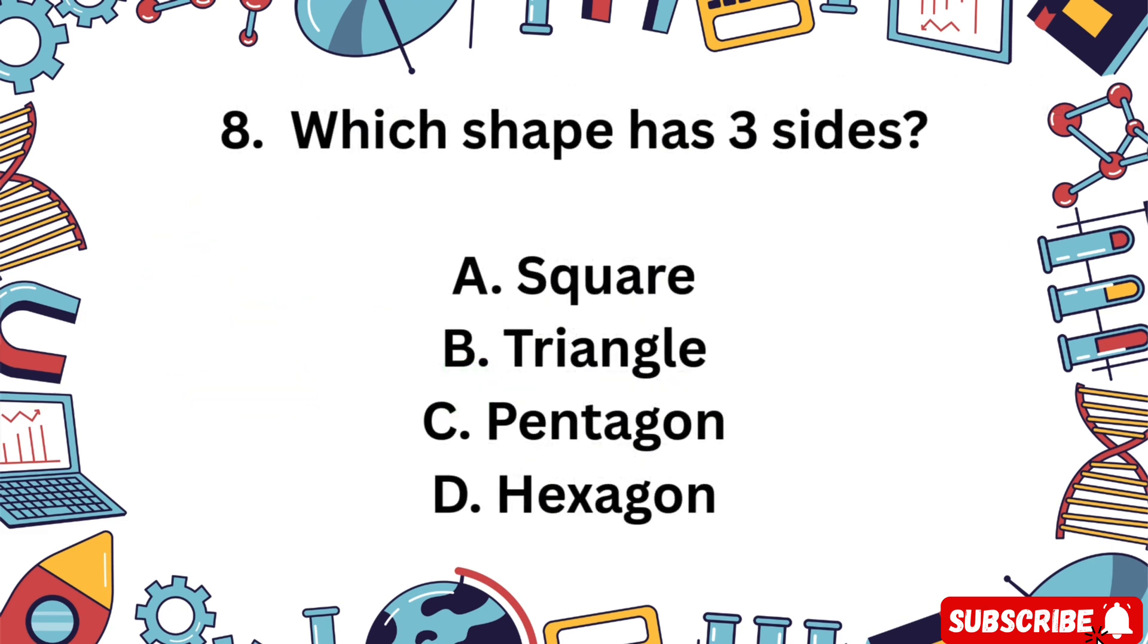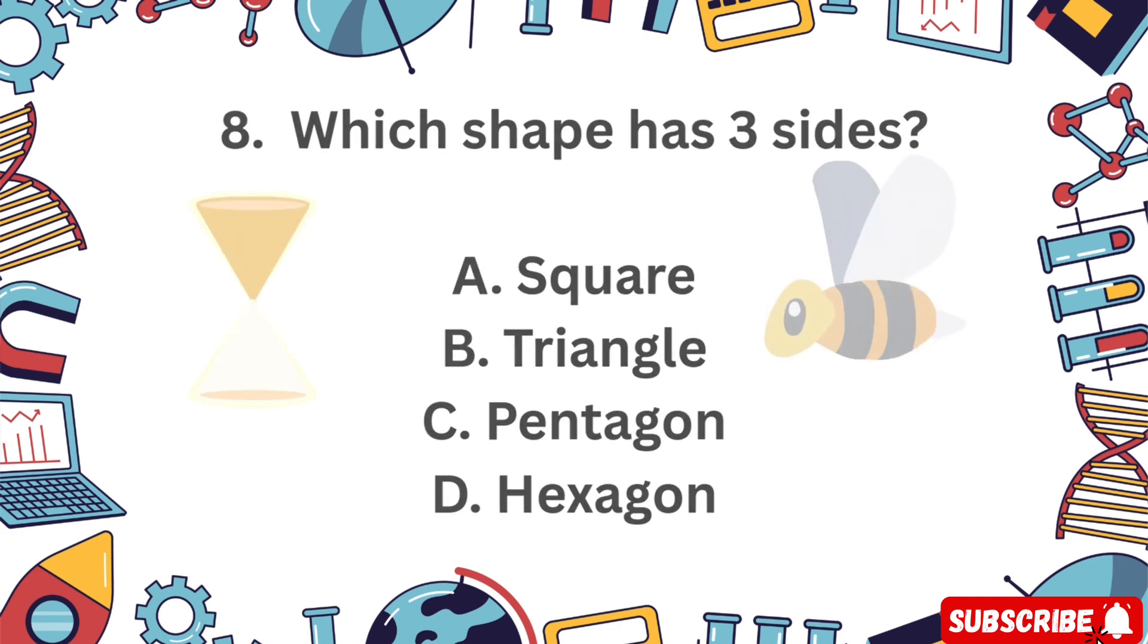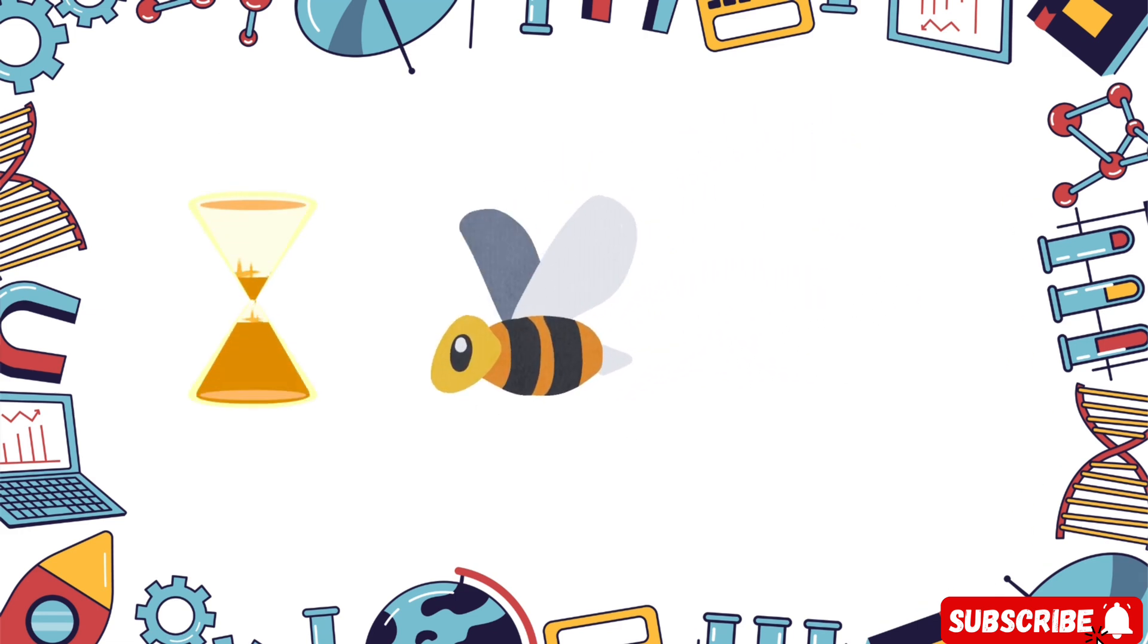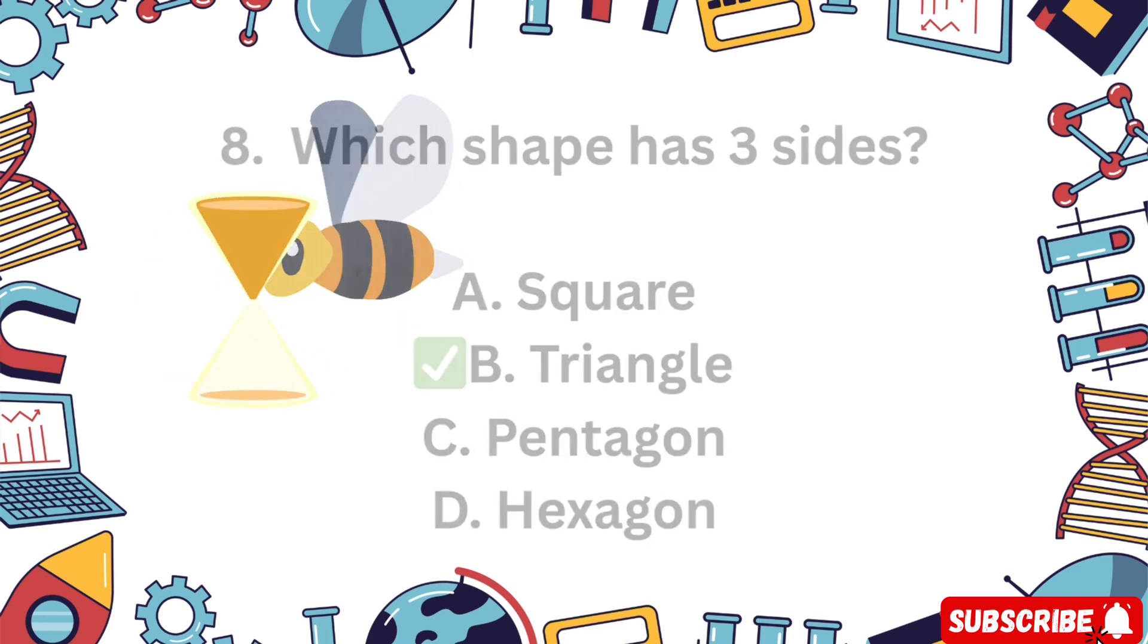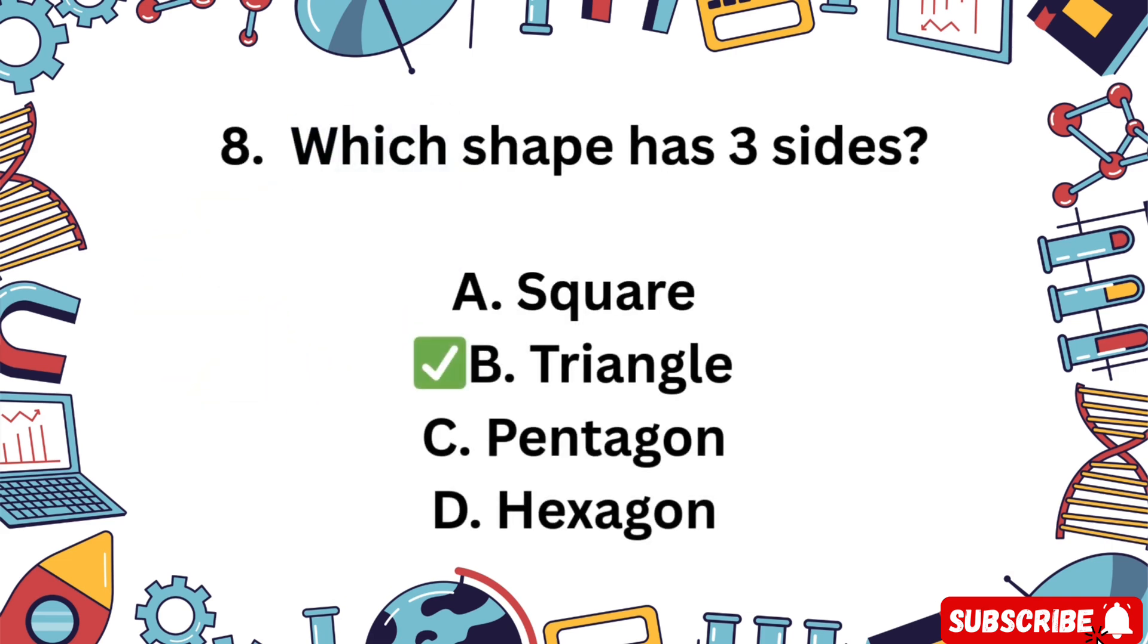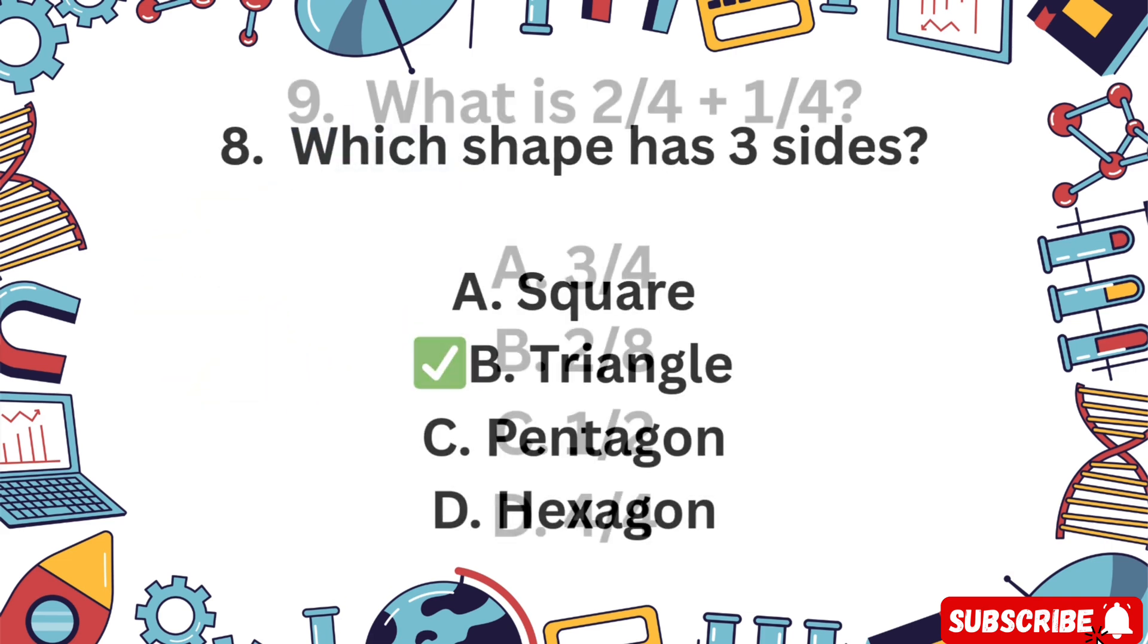Question 8. Which shape has 3 sides? A square, B triangle, C pentagon, D hexagon. Count the sides in your mind. 5 seconds. The correct answer is B triangle. Triangles have 3 sides.